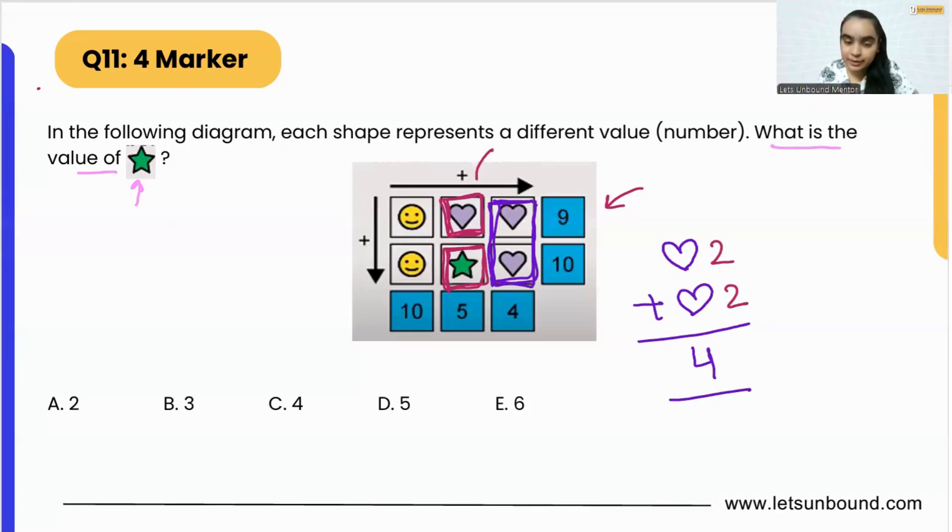Now if we go to the second column, this column tells me that heart plus star equals to five. And students, we already know that heart is two. So two plus what is five? Two plus three is five, yes! So we got the value of this star, that is three. Two plus three is five. Easy peasy, correct?